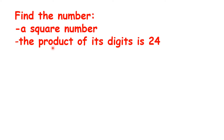We also need to know what product means. A product is what you get when you multiply numbers. So there are two different ways of solving this question: we could either find numbers where the product of the digits is twenty-four and then check if they're square numbers, or we can find square numbers and then check the product of their digits. So let's do that.